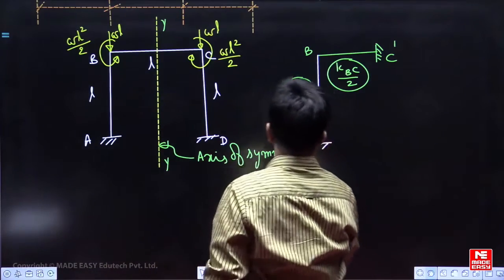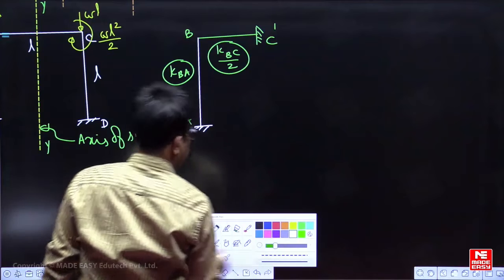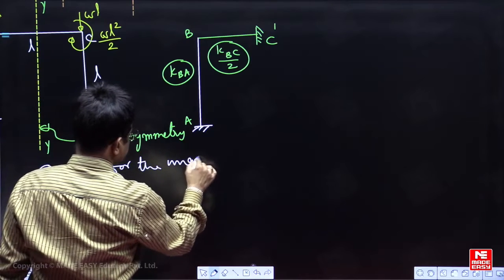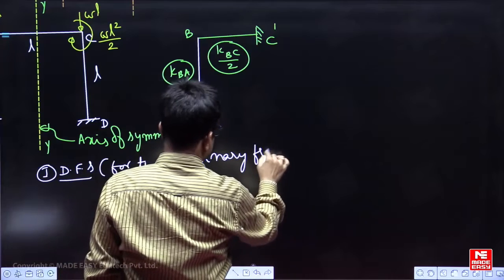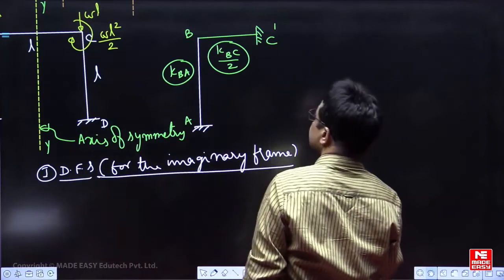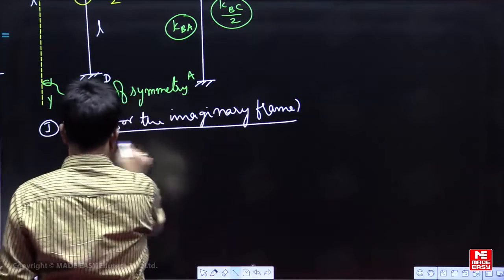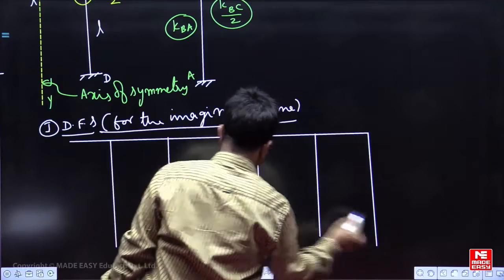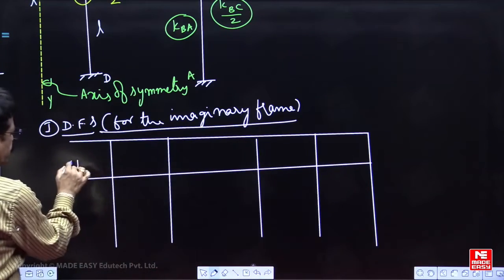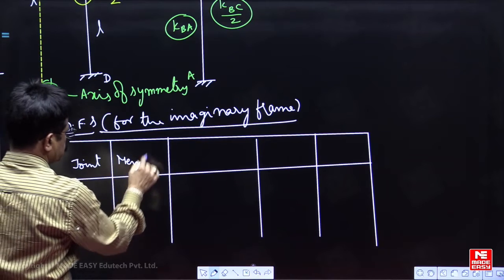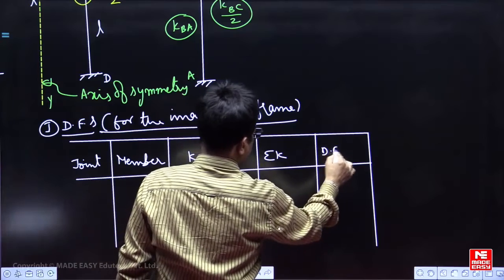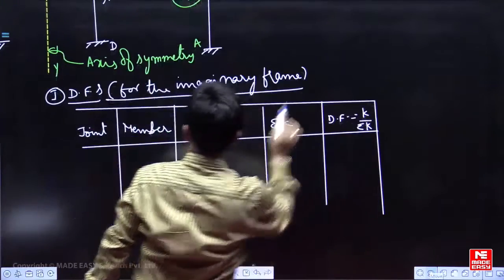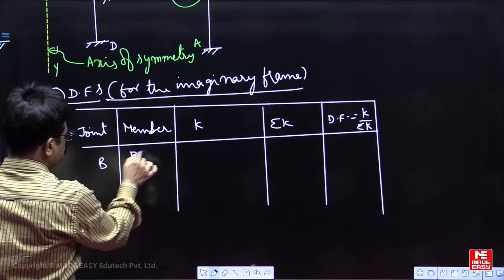What are the stiffness factors, distribution factors? Your first step is distribution factors for the imaginary frame. You will write joint, member, K, sigma K, distribution factors. This is joint, member, K, sigma K, and distribution factors are K by sigma K. You have to take only one joint B, BA and BC dash.